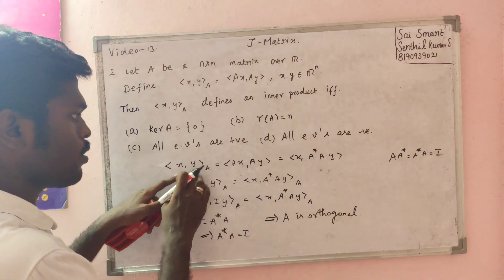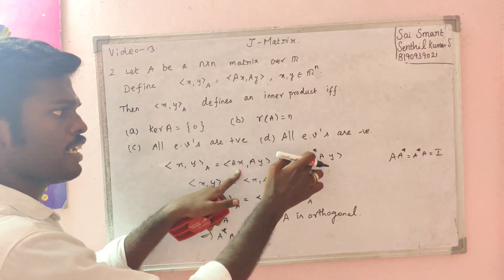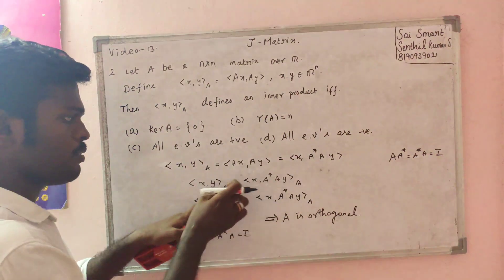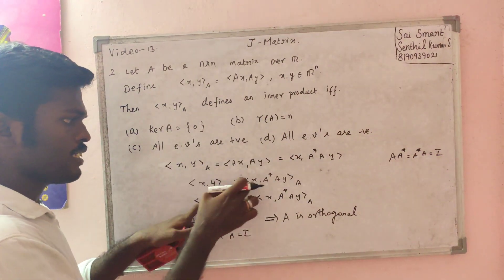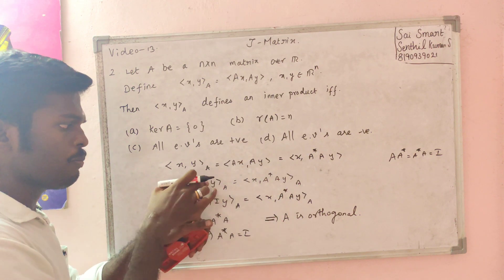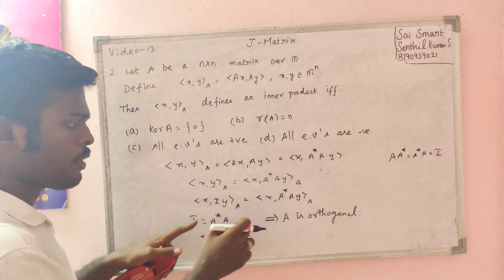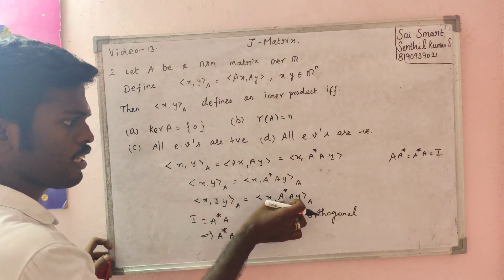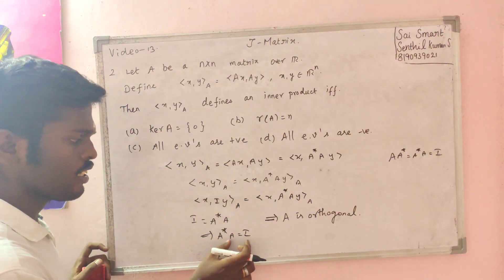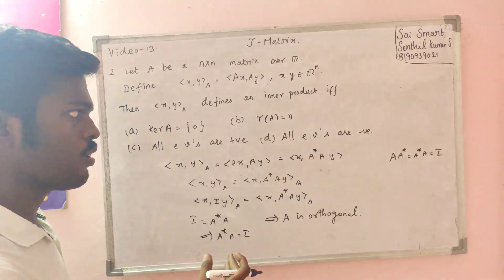To make this understandable: ⟨x, y⟩_A = ⟨Ax, Ay⟩. At the end of this unit, if A is equal to I, then A is an orthogonal matrix. A-star equals A-inverse, and A is orthogonal.